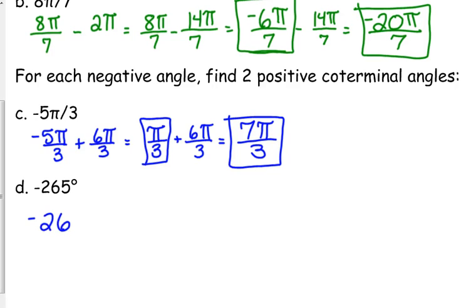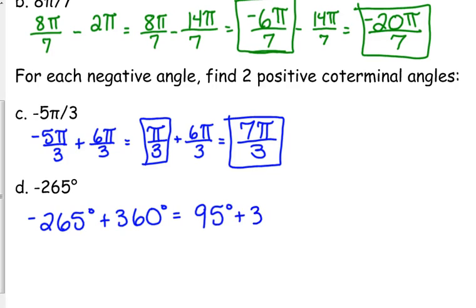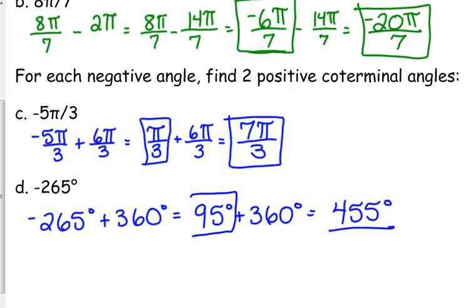Negative 265 degrees plus 360 degrees — what would that be? 95. Yeah. Okay, 95, and add another 360 and that would be 455. Those are two positive co-terminal angles.